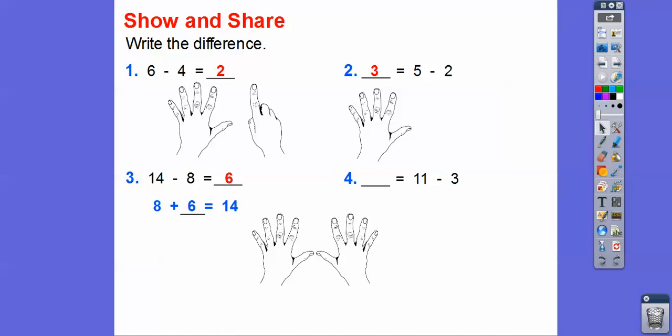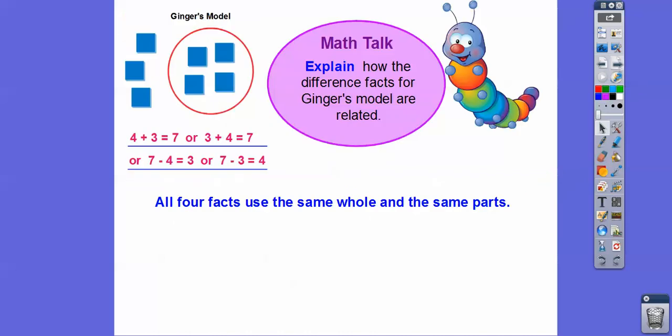11 minus 3 — I'm going to count backwards on this one by 3. Let's count down from 11 by 3: 11, 10, 9, 8. We counted down by 3, so 11 minus 3 is 8. Just some other strategies right there.